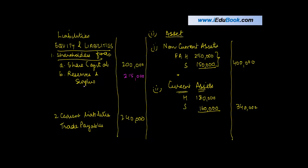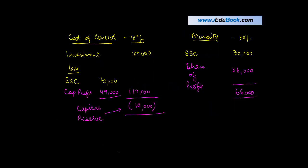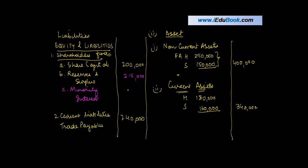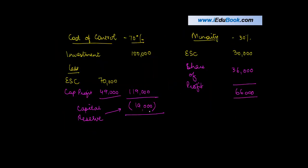Minority interest: Rs. 30,000 (share capital) + Rs. 36,000 (share of profits) = Rs. 66,000. For cost of control: investment Rs. 1,00,000 less share of net assets Rs. 70,000 (share capital) + Rs. 49,000 (capital profits) = Rs. 1,19,000. So cost of control = Rs. 1,00,000 minus Rs. 1,19,000 = negative Rs. 19,000, which means it is a capital reserve. Total reserves and surplus = Rs. 1,00,000 + Rs. 80,000 + Rs. 35,000 + Rs. 19,000 = Rs. 2,15,000.